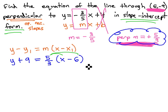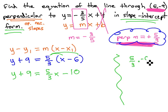We can quickly clear the parentheses by distributing the 5/3 through to get y + 9 = 5/3x - 10. We get that -10 by multiplying 5/3 times the -6. If we put the 6 over 1, we can see the 6 and 3 reduce, giving us -2. 5 times -2 is that -10.